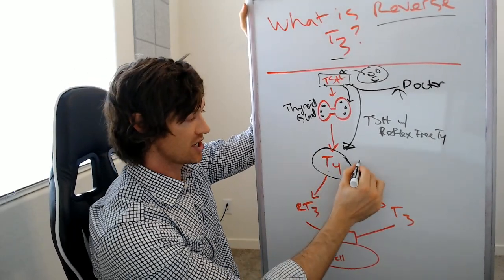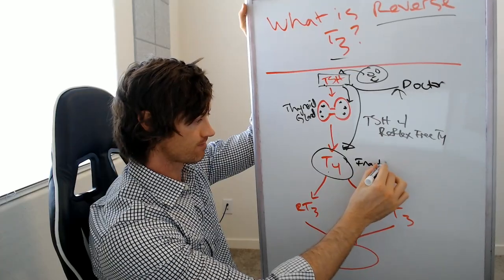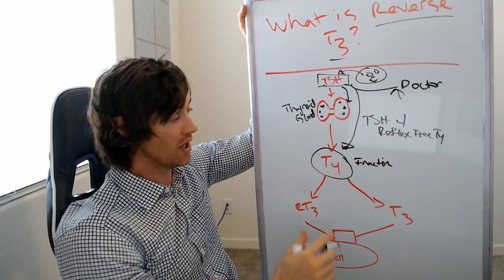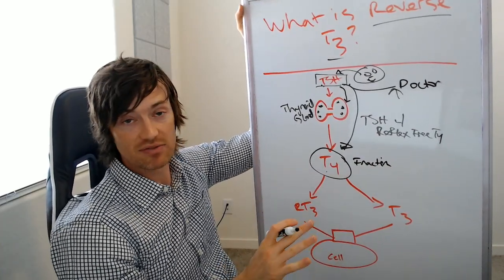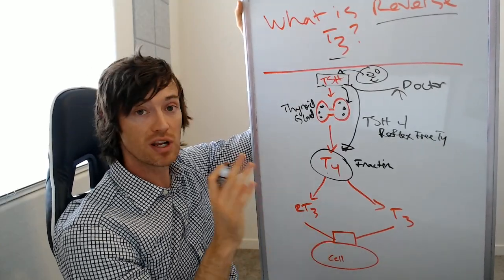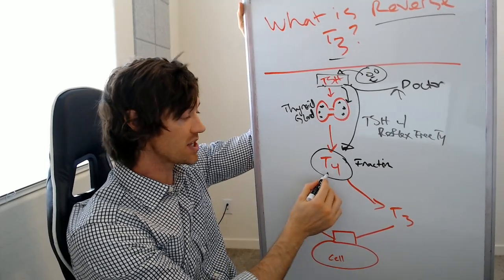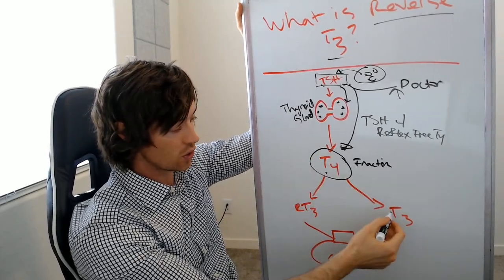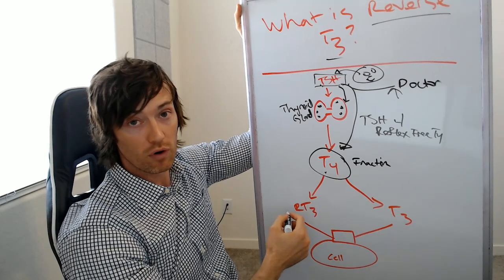So T4 by itself, what you need to understand is it is inactive. Yes, it is a thyroid hormone, but no, it doesn't do any of the heavy lifting of what you want thyroid hormone to do. That does not come from T4. T4 is only useful insofar as it is a reservoir for turning into T3 or reverse T3.